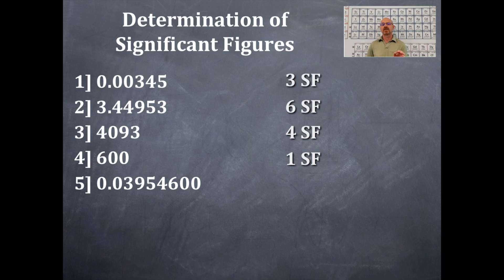Example number five. The number is 0.03954600. Here are the non-zero integers that count. That is, the 3, the 9, the 5, the 4, and the 6. Those count. Then, the two zeros that are previous, that is, prior to the 3, they do not count. So the 0.0 do not count. Those zeros do not count because those are leading zeros. Leading zeros never count.